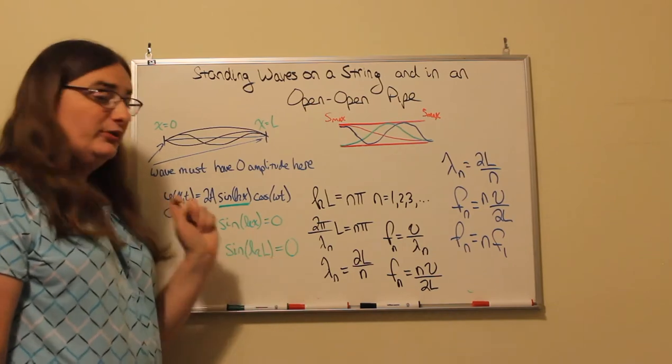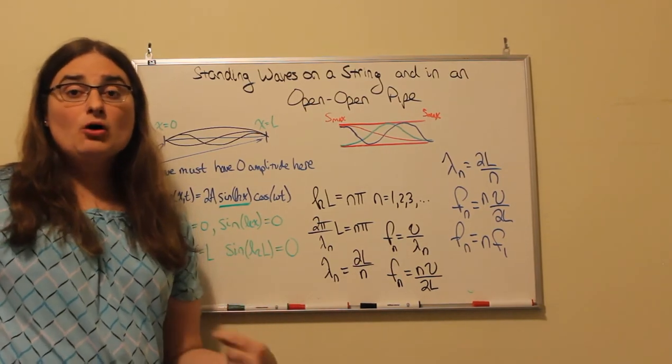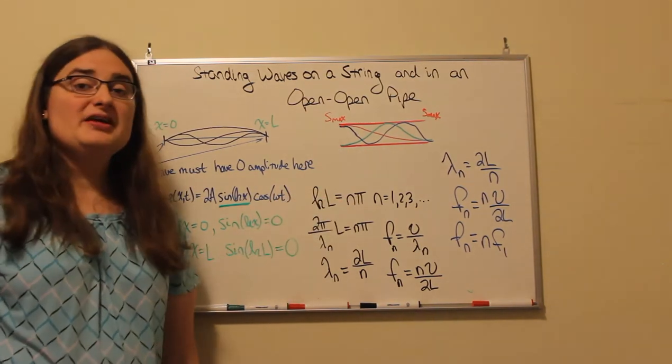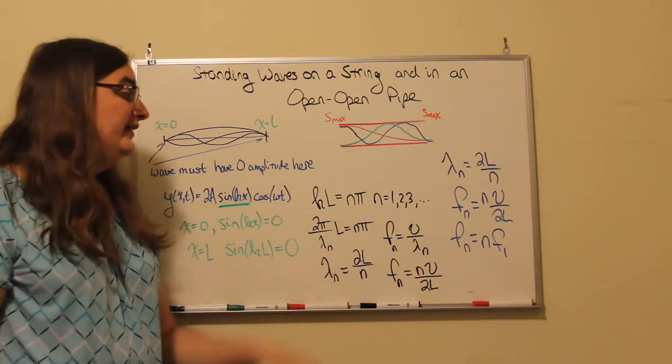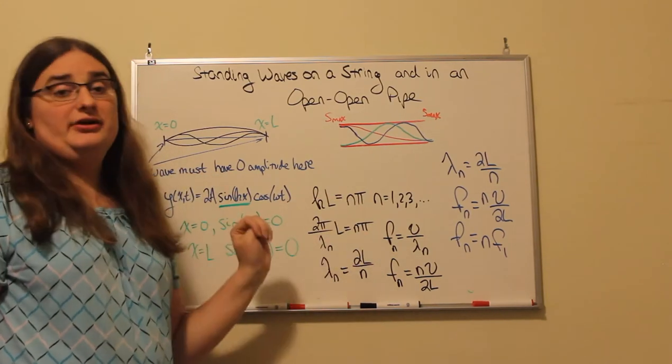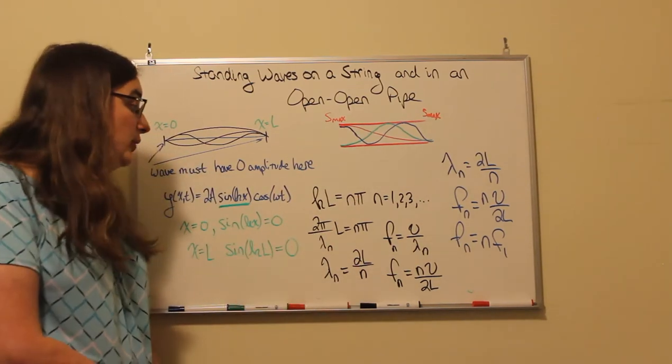To get a sine equal to zero, the argument inside that sine has to be a multiple of pi radians. So kl is going to be equal to an integer times pi, where that integer is positive and not zero. So one, two, three, four, five, whatever, all of those work.